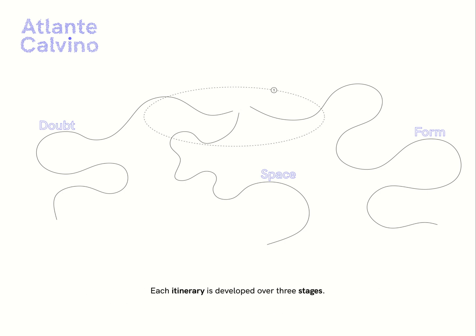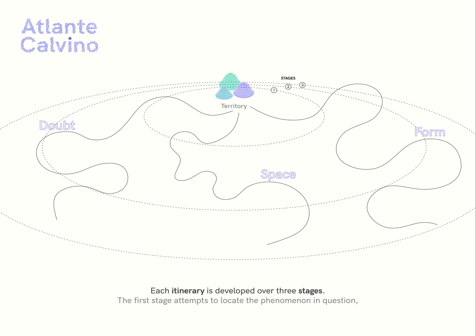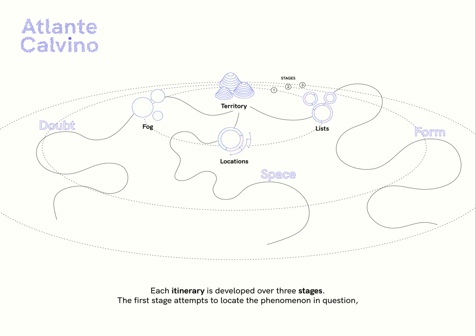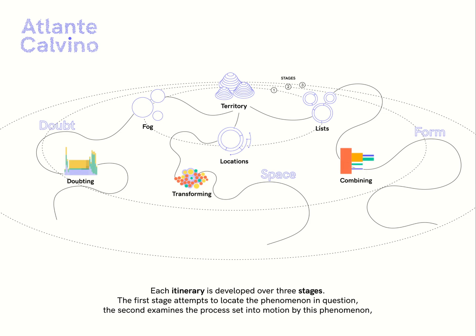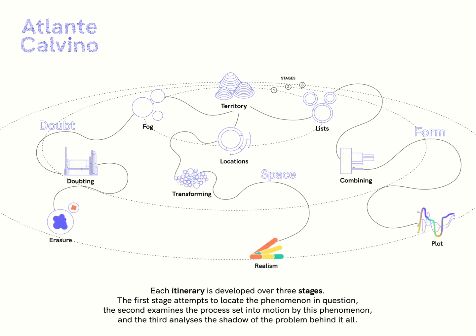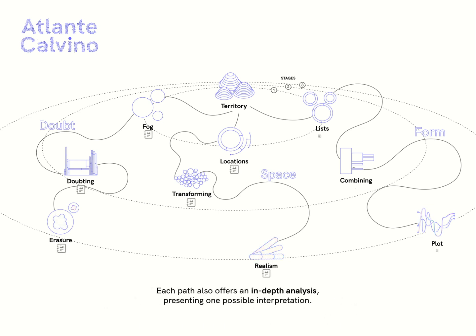Each itinerary is developed over three stages. The first stage attempts to locate the phenomenon in question. The second examines the process set into motion by this phenomenon, and the third analyzes the shadow of the problem behind it all. Each path also offers an in-depth analysis, presenting one possible interpretation.